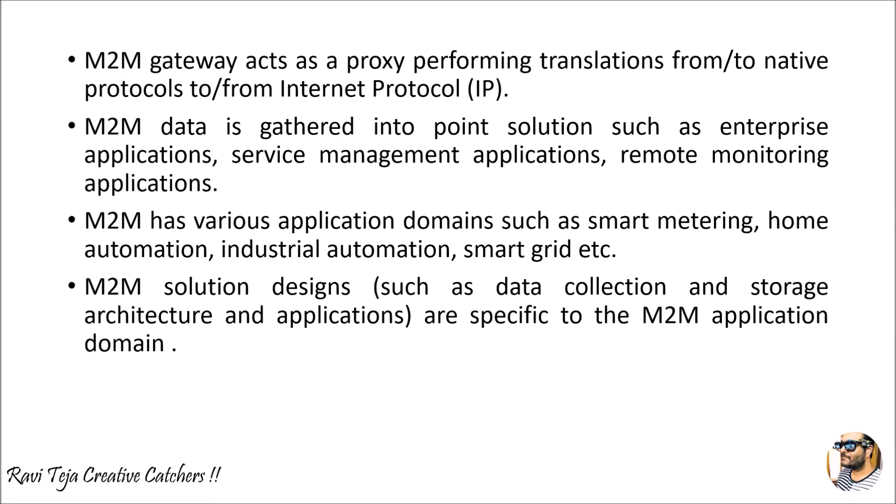This M2M data is gathered in point solutions like enterprise applications, service management applications, and remote monitoring applications. Machine to machine also has various application domains such as smart metering — especially for home automation, where there are multiple rooms in a house and all IoT devices need to exchange data and work together for a good output. There is also industrial automation, where lots of sensors are attached to industries, all connected to several nodes, with each IoT node needing communication between other machines. Smart grid is another application.